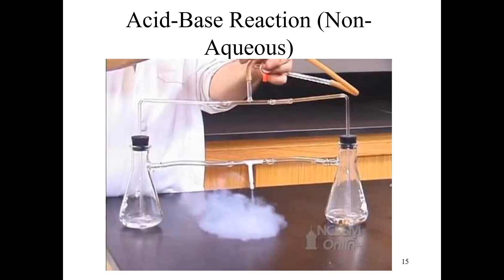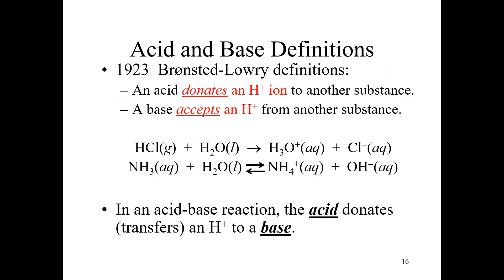That tells you that you don't need water to explain acid-base reactions. The Arrhenius definition also doesn't explain how ammonia produces hydroxide ions in water, because ammonia doesn't have any hydroxide ion in it. It also doesn't explain why dissolving things like ammonium carbonate or sodium oxide in water forms basic solutions, since they don't contain hydroxide ions. So in 1923, Brønsted and Lowry proposed a new definition: an acid donates a hydrogen ion to another substance, and a base accepts a hydrogen ion from another substance.